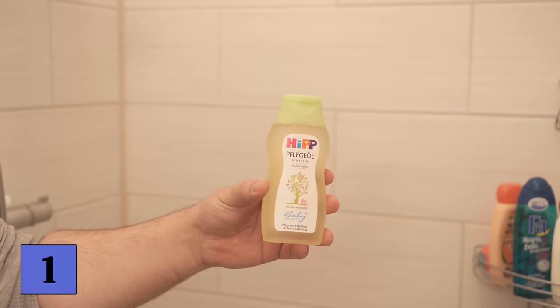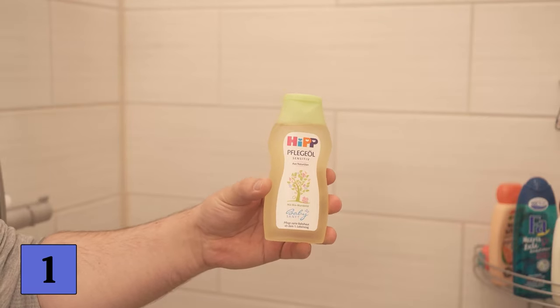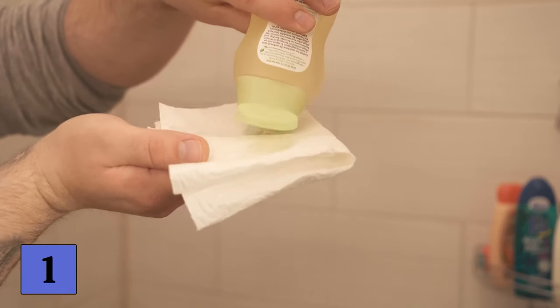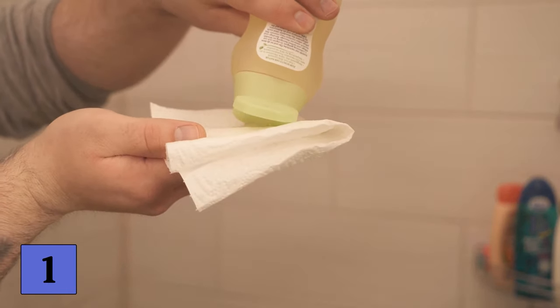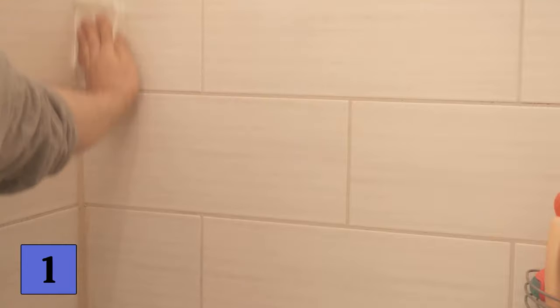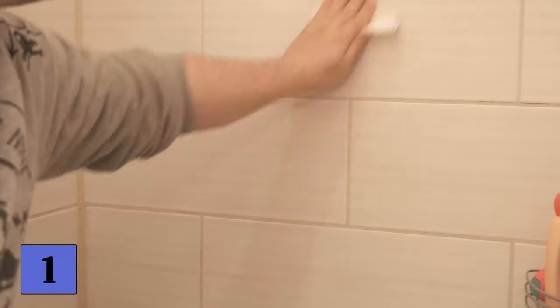You can use baby oil in your shower on the tiles so that limescale and dirt don't build up so quickly, but you only need a very small amount of baby oil in a normal household cloth. Put a small amount on the cloth and start wiping all the tiles in your shower. As I said, it should never be too much. Otherwise there is a risk that all the oil will settle on the floor and you could slip in the shower.